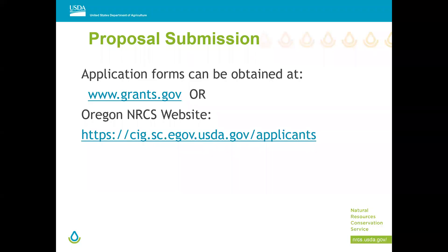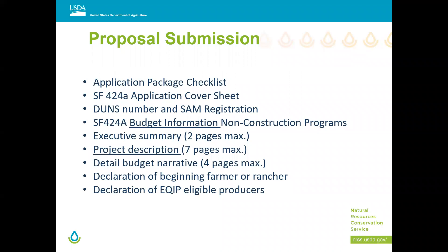For proposal submissions, you can find application forms at grants.gov or on our NRCS website under applicants. We're looking for the application package checklist, the SF-424, DUNS and SAM registration, budget information, a project description, a budget, and a detailed budget narrative — that's one thing we get dinged on a lot and it gets sent back from grants and agreements. You'll also need a declaration if you're a beginning farmer or rancher, and a declaration of eligible EQIP producers. OSU is eligible; we've had CIGs with OSU before.